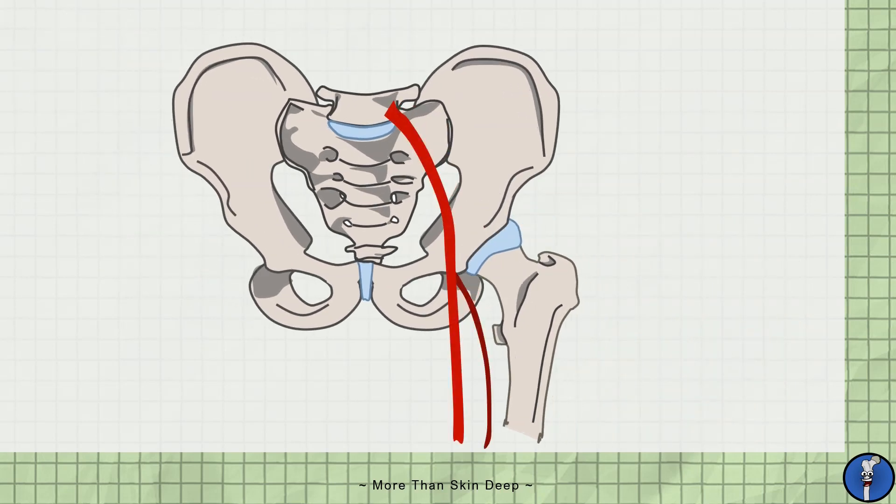Blood supply to the hip comes from a number of arteries arising both from the thigh and the pelvis. Most blood comes from the medial circumflex femoral artery, which is a branch of the deep femoral artery.